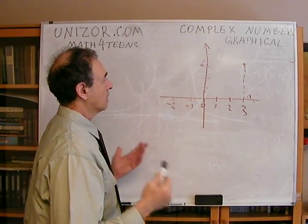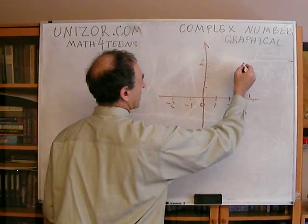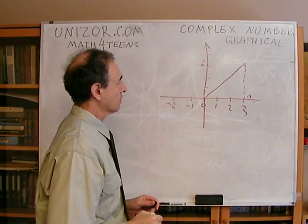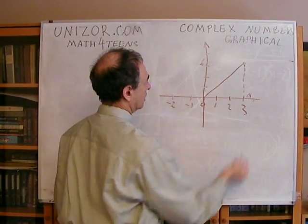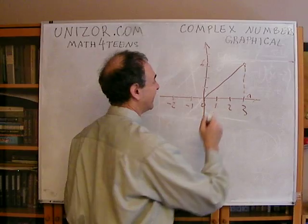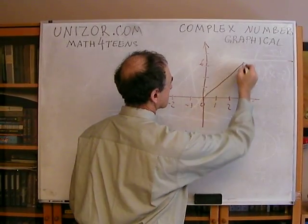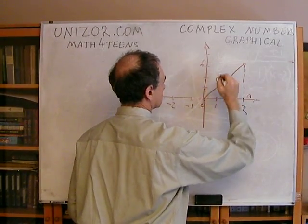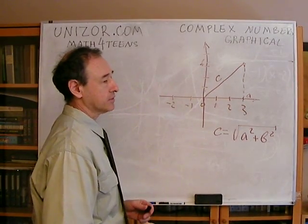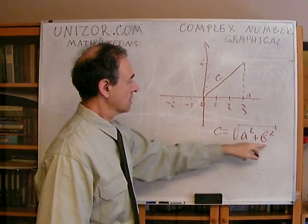Now, certain elementary properties of this representation. We can always think about the segment connecting a complex number to zero. It has a length, and it forms a right triangle, so the Pythagorean theorem can help us. Since the legs are a and b, the length — let's call it c — is the square root of a squared plus b squared. That's one thing we can say about our complex number's position.